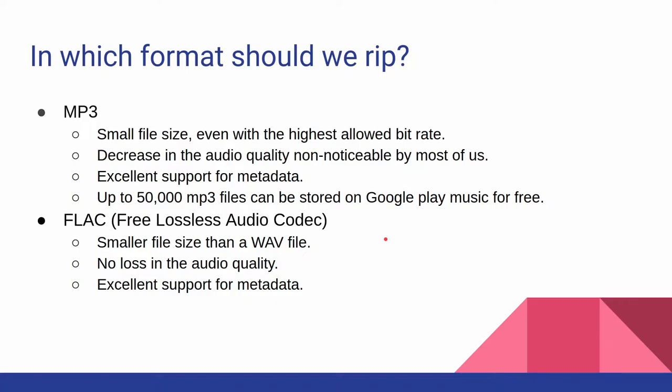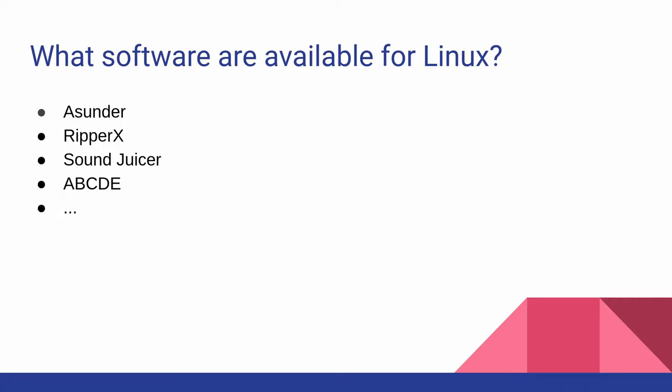Both MP3 and FLAC are popular formats supported by most media players in software and hardware. For Linux, there are a number of software options available — not all have a graphical user interface. I have listed four: Asunder, Ripper X, Sound Juicer, and ABCDE. The first three have a graphical user interface; ABCDE runs on the command line. All four can be used for ripping audio CDs.